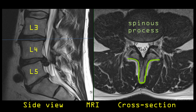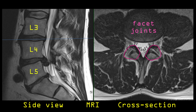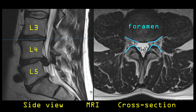Behind the spinal canal is this pointy looking bone called the spinous process — this is the bone that you feel under the skin when you feel the spine. Next, I've outlined the two joints, one on the right and the other on the left, between the L3 and the L4 bones called the facet joints. Between the facet joints and the disc are two channels, one on the right and the other on the left, called the foramen. You can think of the foramen like an exit ramp — at each level a nerve exits out of the spine through the foramen.